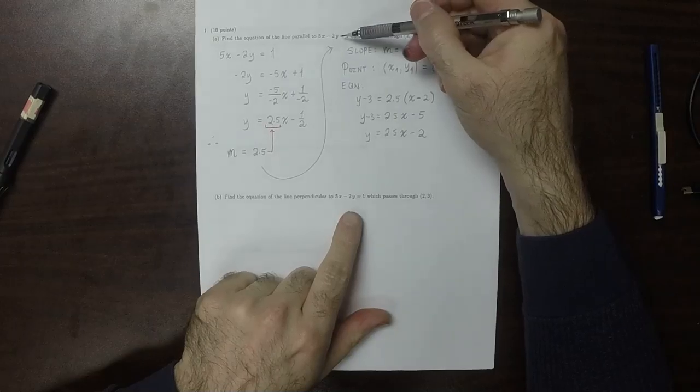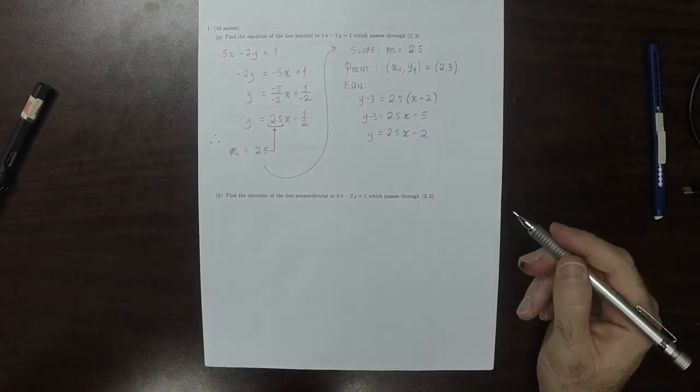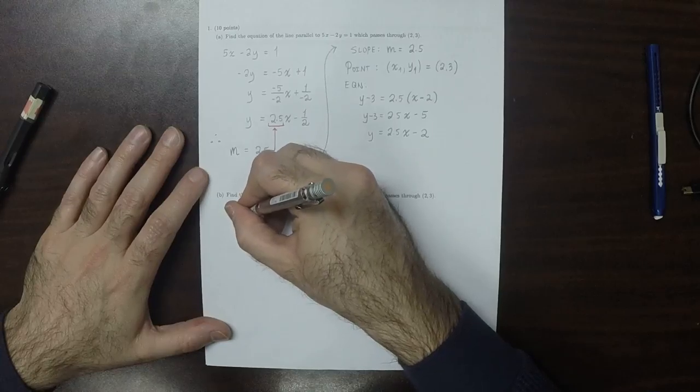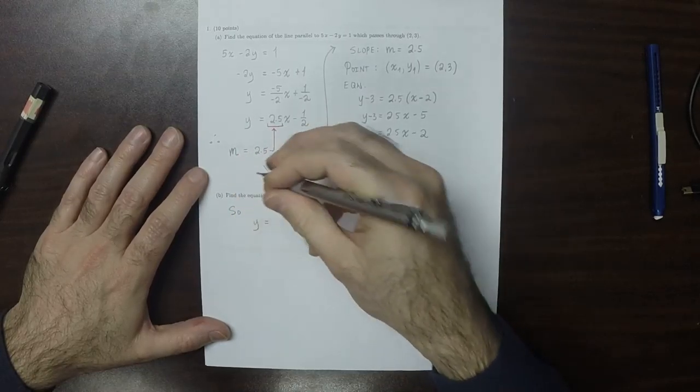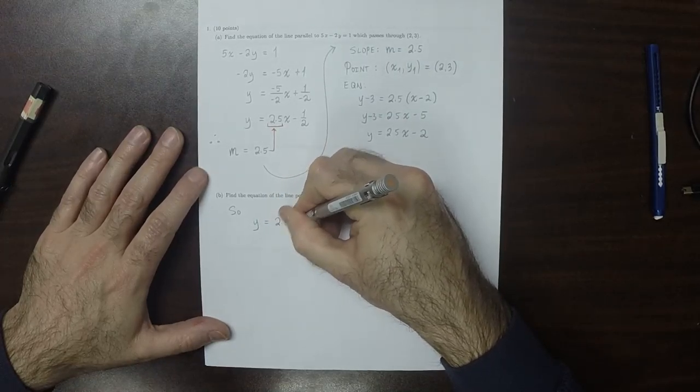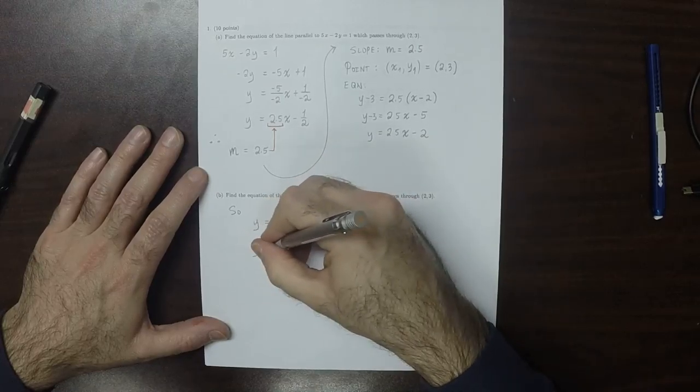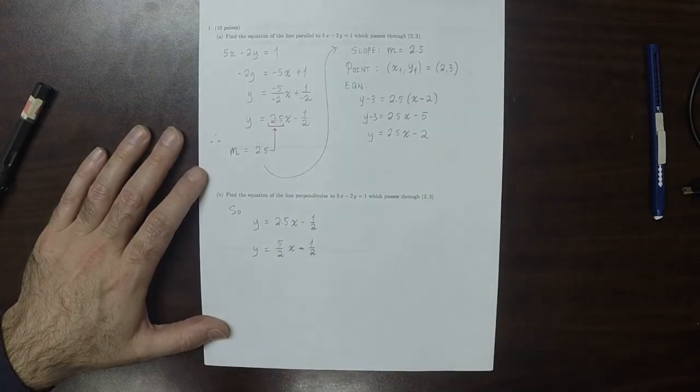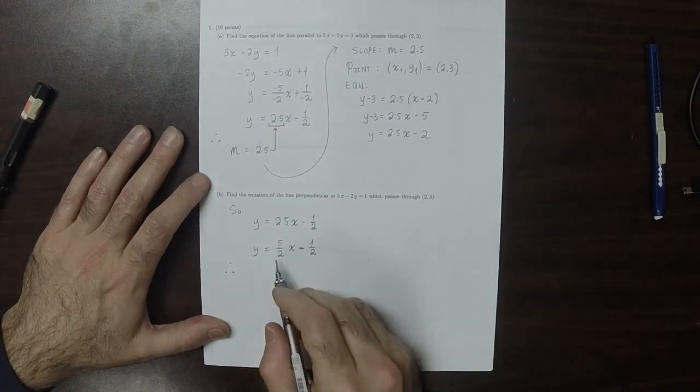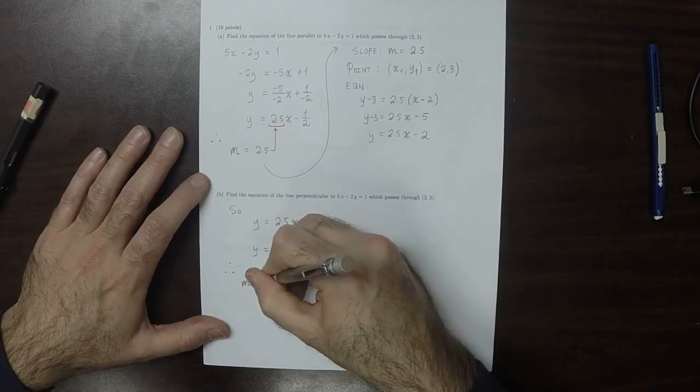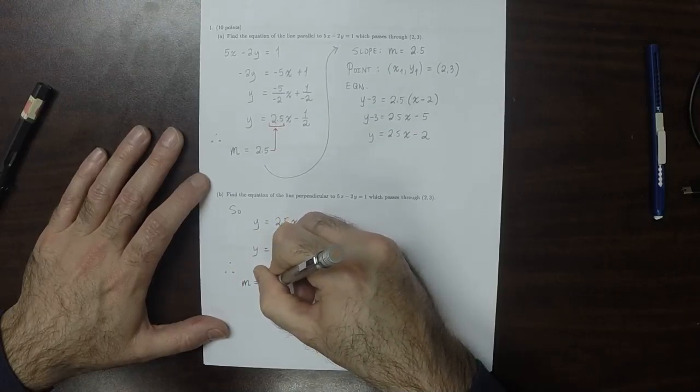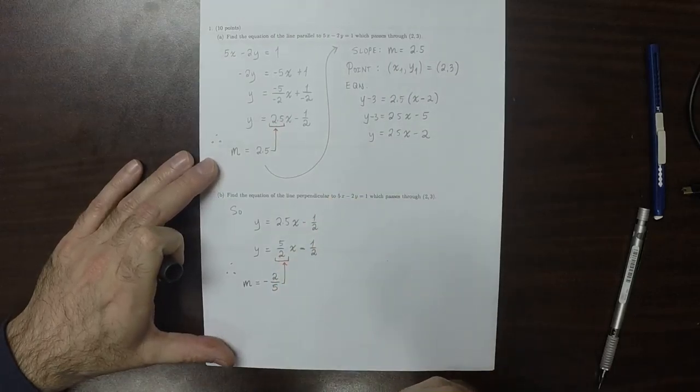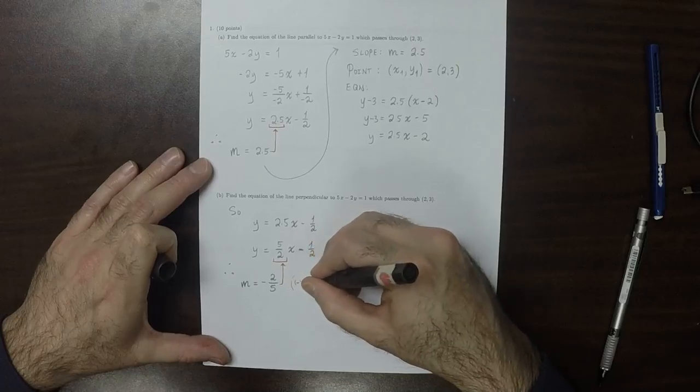Part b, we're given the same, except now we want a perpendicular line. So we did some work up there, y is 2.5x minus half. But it may be slightly more useful to write that as 5 over 2x minus half. And therefore, the slope that we want is the negative reciprocal of that, which is negative 2/5, because perpendicular slope is negative reciprocal.